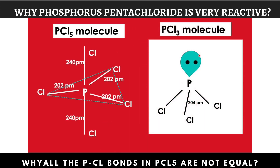But in the PCl3 molecule, phosphorus is attached to 3 chlorine atoms. So we have only 3 P–Cl bonds. All of these bonds are equivalent in size — 204 picometers. So, compared to PCl5, in PCl3, the bond pair–bond pair repulsion is less.